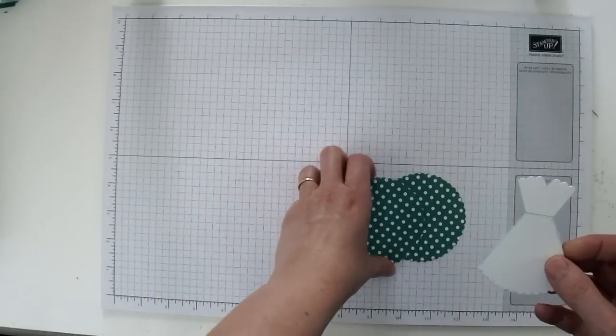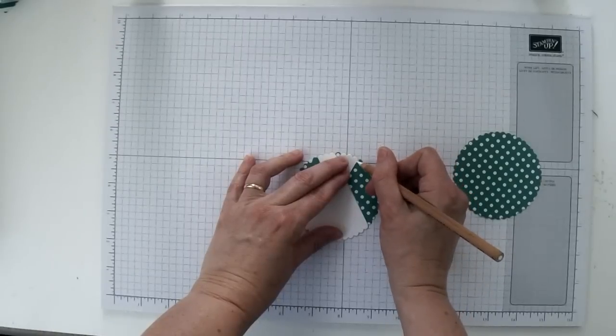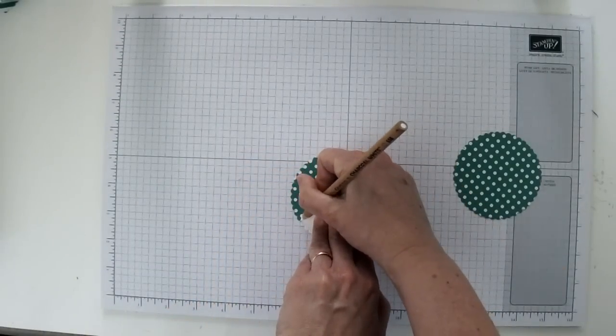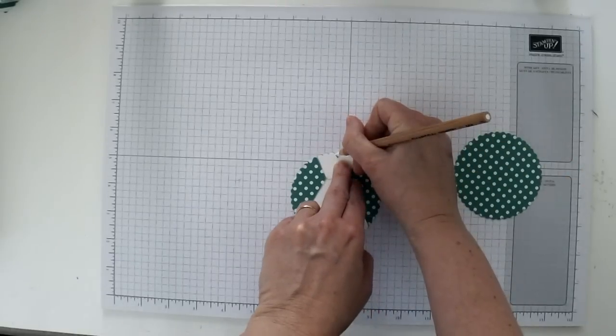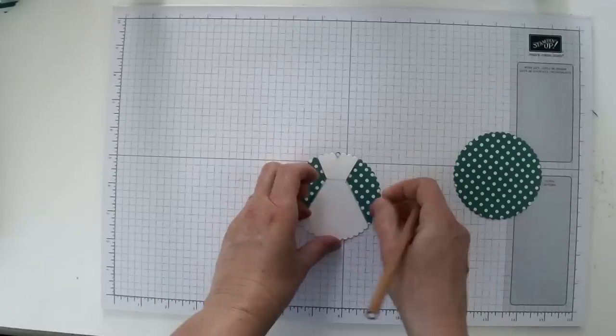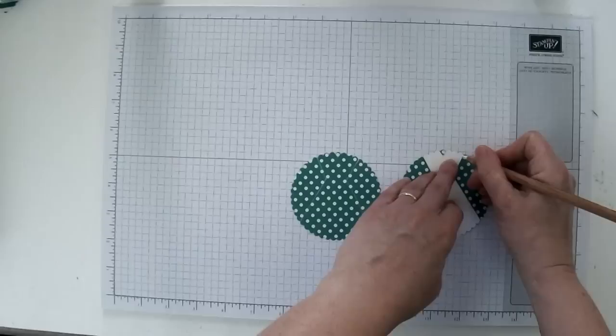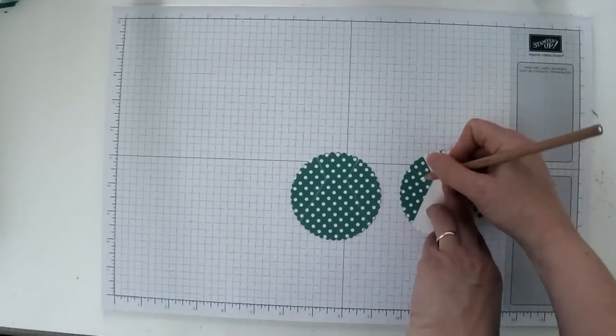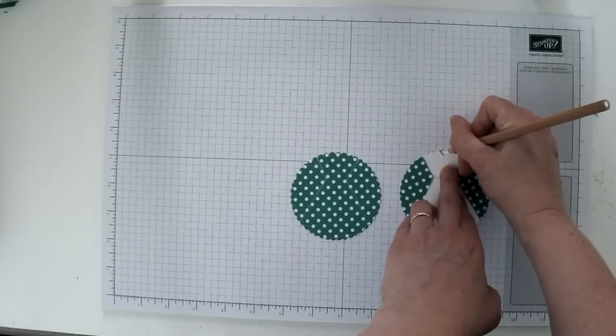Once you have your template made all you need to do is trace it onto the scalloped circle. I'm just going to take a pencil and trace on my dress and those are the lines that I'm going to cut on later. Don't forget to trace the little V on there on top and then I'm going to do the same with my other circles. You just need to trace that right on to your scalloped circle.